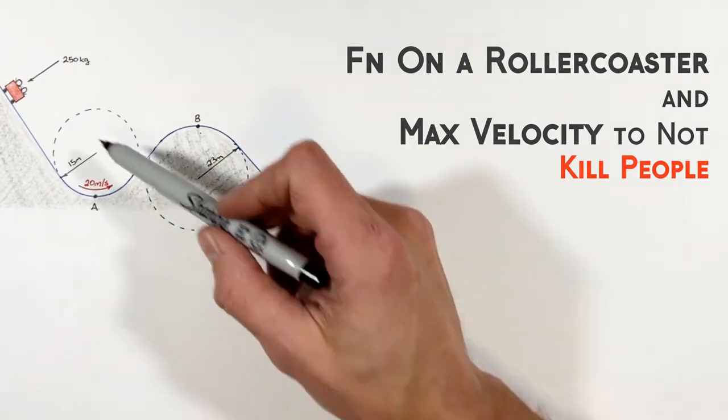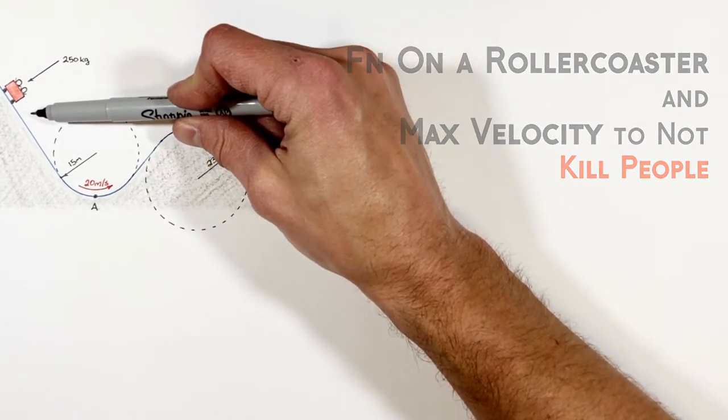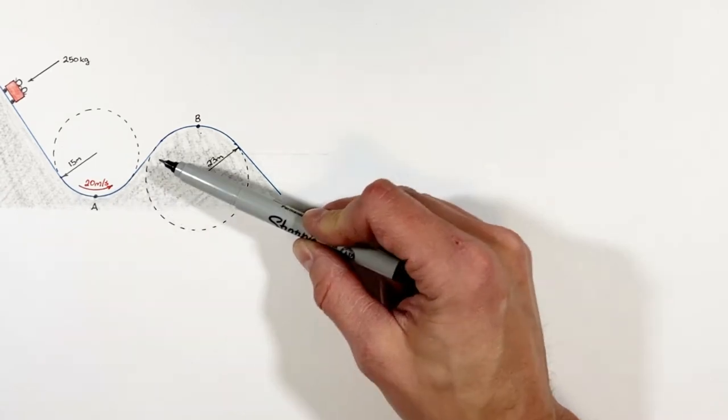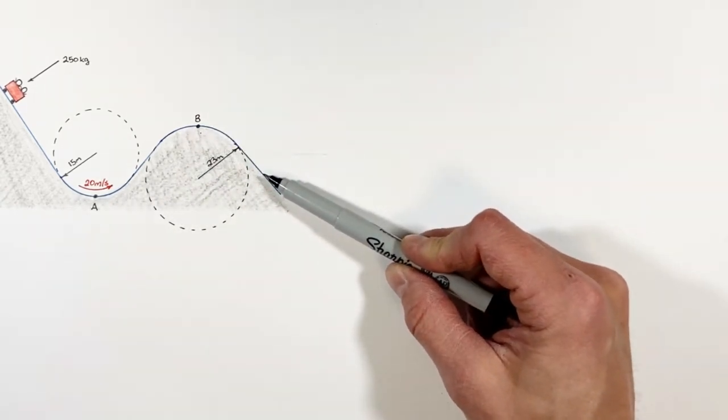All right, let's take a look at the situation where we have a roller coaster cart which is going to coast down a hill, go through the bottom of some trough, and then come up over the crest on another hill.